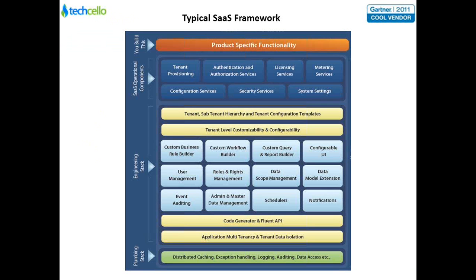This is a typical SaaS framework — shown here from a reference perspective to give an idea of the various things a framework should contain. Primarily three things constitute the framework. One is the plumbing stack itself, which provides all the basic plumbing layers like distributed caching, the way you handle exceptions, how you keep track of logging, and audit trail functionalities. These are small in nature but very important because together they provide the base standards that have to be put in place.